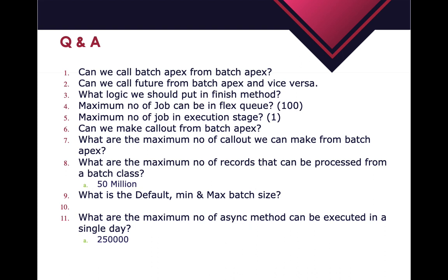What is the maximum number of callouts we can make from Batch Apex? For every method of a single Batch Apex - start, execute, and finish - we can make 100 callouts each. So from start you can make 100 callouts, from finish you can make 100 callouts, and from execute you can make 100 callouts per execution. If your Batch Apex executes 5 times, you can make 500 total callouts in the execute method.